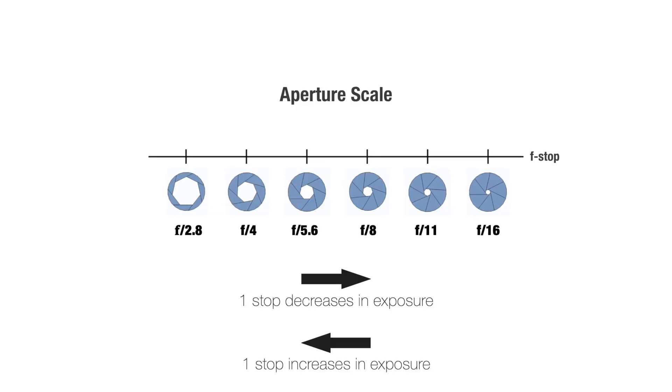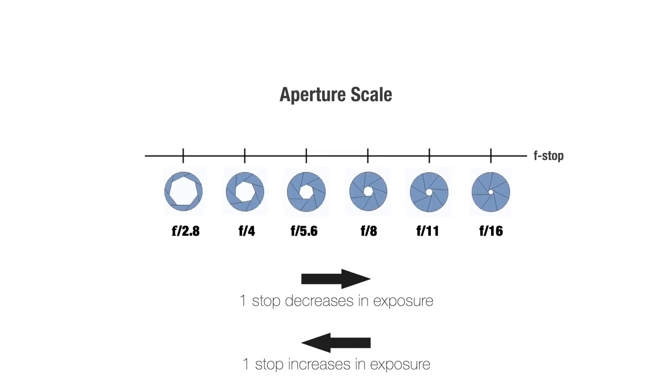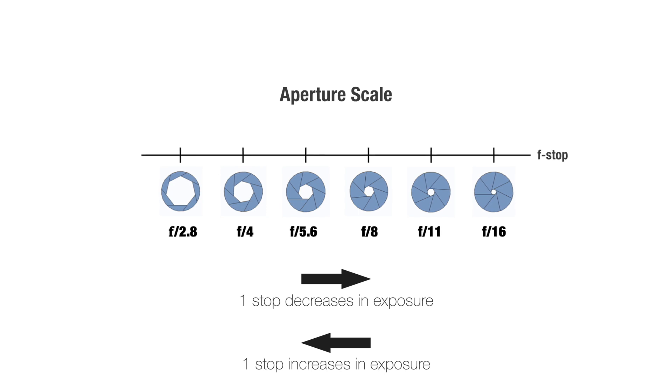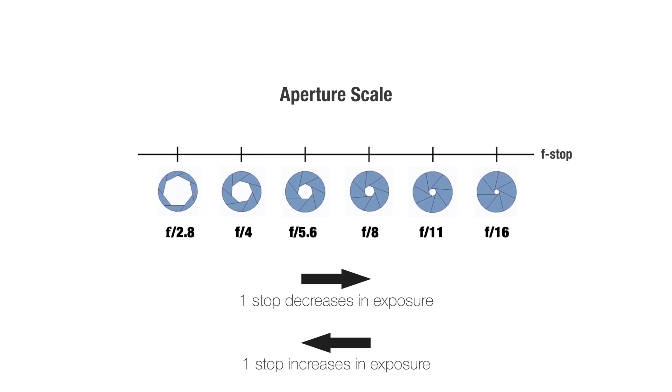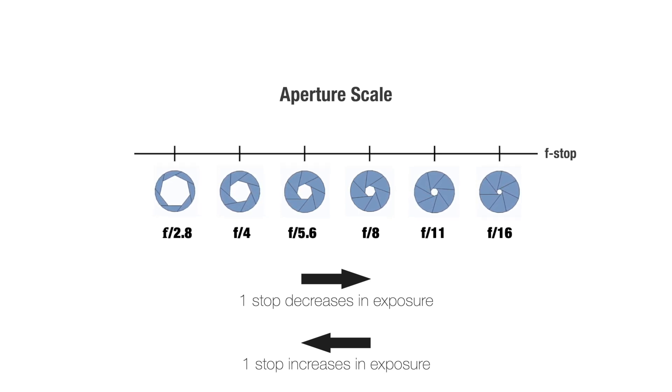But anyway, that is already done for you in the form of this diagram, so all you have to do is memorize it. Here we see what F numbers correspond to consecutive increases and decreases in light by one stop, done by halving and doubling the area of the aperture opening. At any F stop, if you multiply by 1.414, you halve the area of the opening, decreasing the exposure by one stop. And conversely, if you divide your F number by 1.414, you double the area of the opening and increase exposure by one stop.